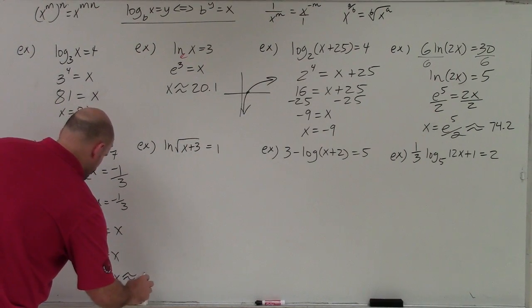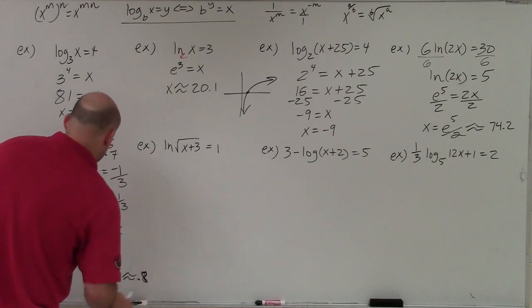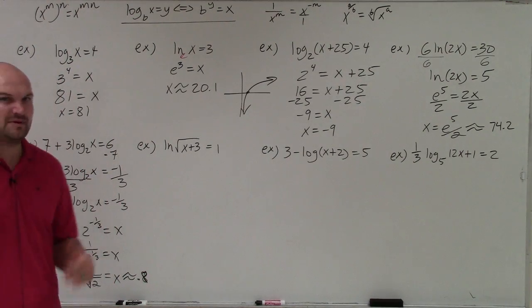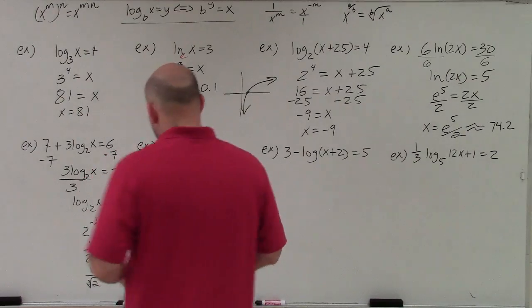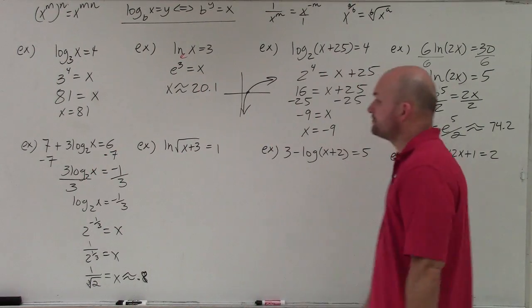Rounding to the nearest tenth gives 0.8. You could rationalize the denominator if you're looking for an exact answer, but here we're approximating the solutions.